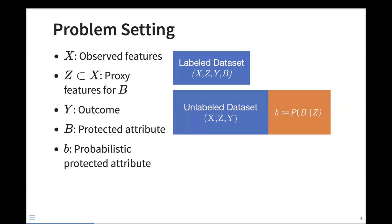I want to outline the formal setting we'll be working in. We assume a user will observe two different data sets. The first is their labeled data set and the second is unlabeled. Both have access to observed features X, a subset of which Z we call proxy features for a binary protected attribute B, and also a binary outcome Y. For the unlabeled data set, we don't observe the protected attribute B; instead, we observe an estimated protected attribute we call little b. We treat the estimation process as a black box that takes proxy features as input and outputs a probability or estimate of the protected attribute.